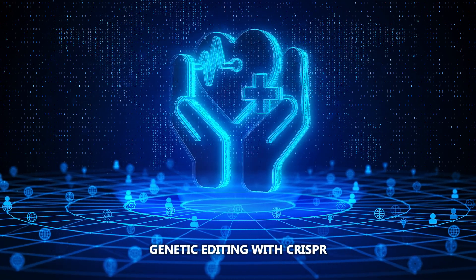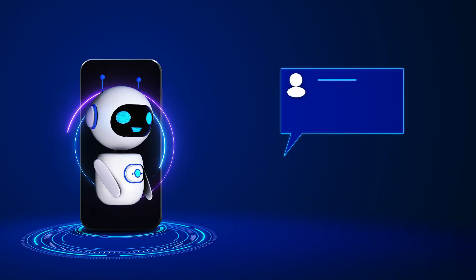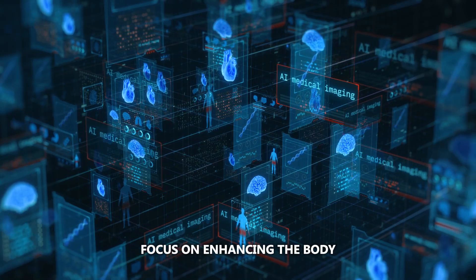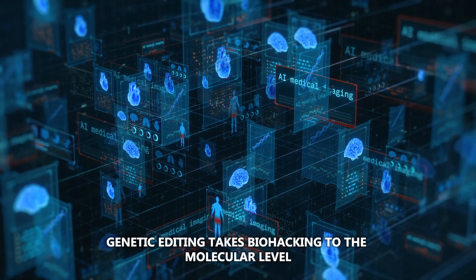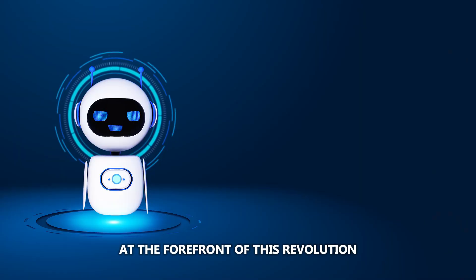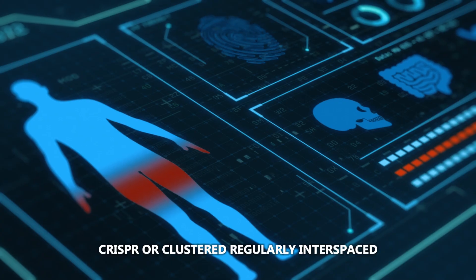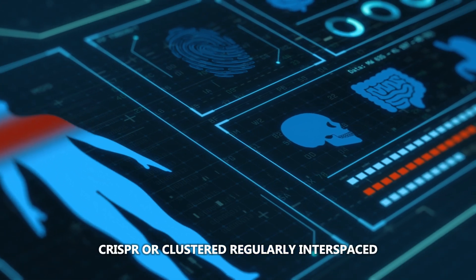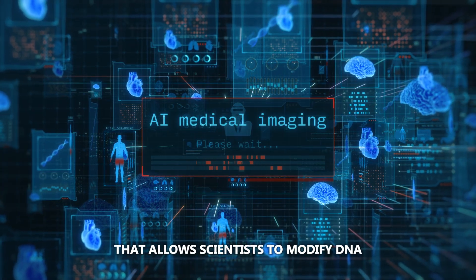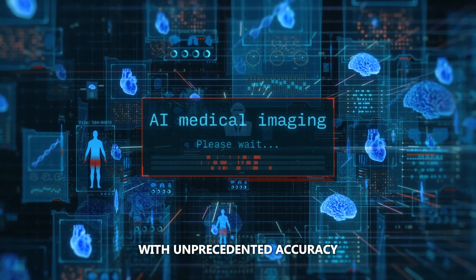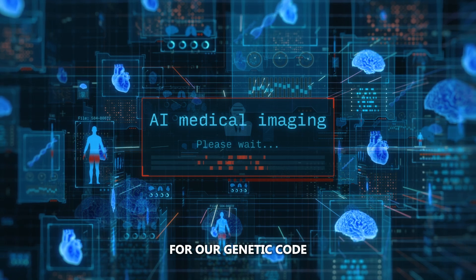Genetic editing with CRISPR – Redefining human potential. While technological implants focus on enhancing the body through hardware, genetic editing takes biohacking to the molecular level. At the forefront of this revolution is CRISPR technology. CRISPR, or Clustered Regularly Interspaced Short Palindromic Repeats, is a precise genetic editing tool that allows scientists to modify DNA with unprecedented accuracy. It's like having a biological cut-and-paste tool for our genetic code.